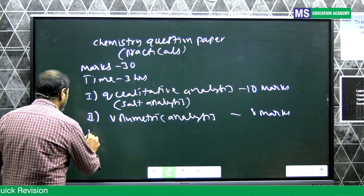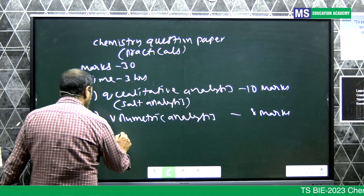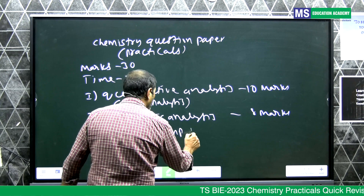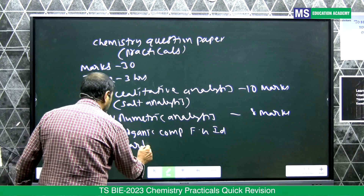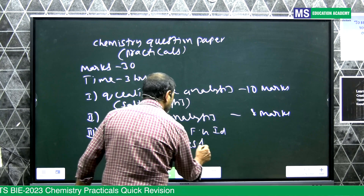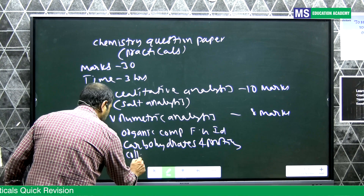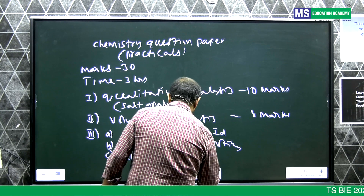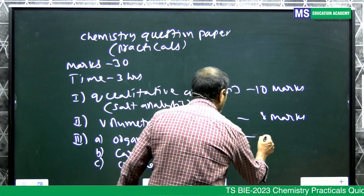The third question has several parts. Part A is organic compound functional group identification. Part B is carbohydrates and proteins. Part C is colloidal solution preparation. For question number three, there are 6 marks.